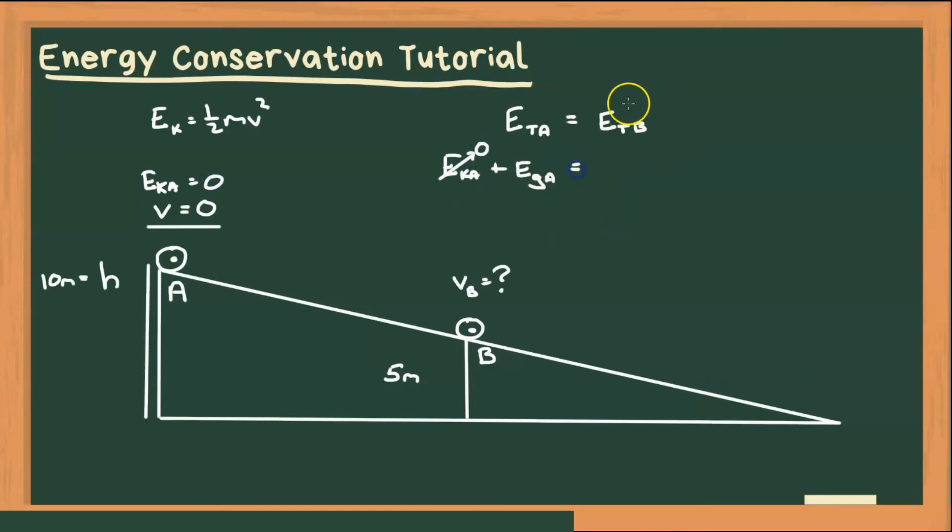And that's all going to equal our total energy at B. So our total energy, we have some height still, and we're going at some speed. So it is, again, the sum of our kinetic energies at B plus our gravitational potential energies at B. Alright, now our equation for gravitational potential energy is EG equals MGH. Now for A, that is going to be MGH times H at A. Because H at A is different from H at B.